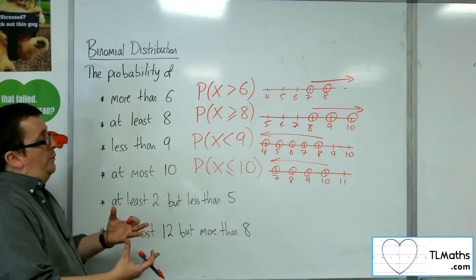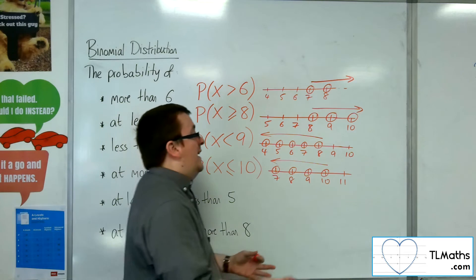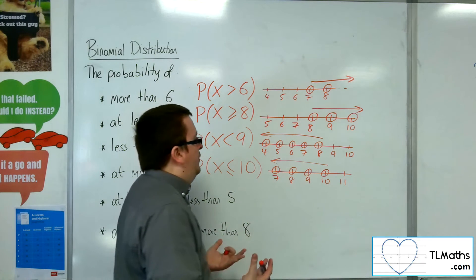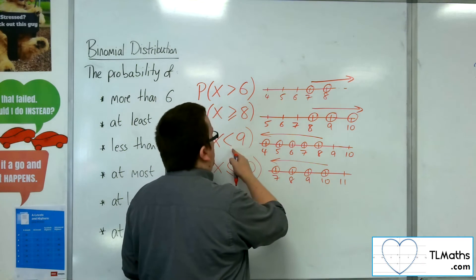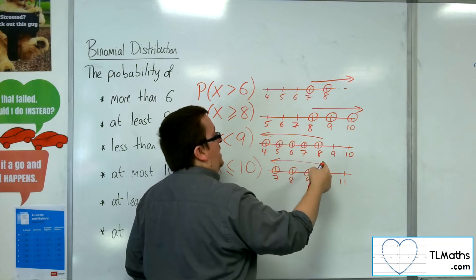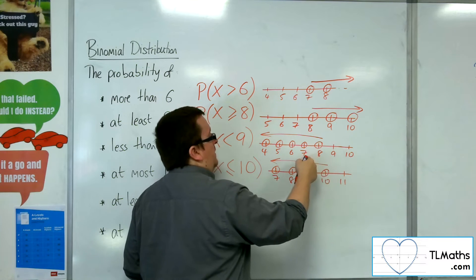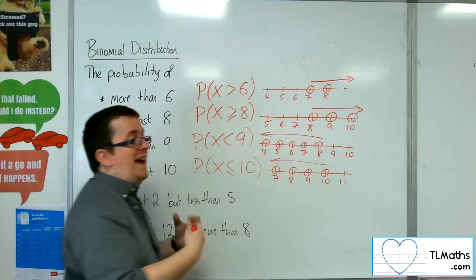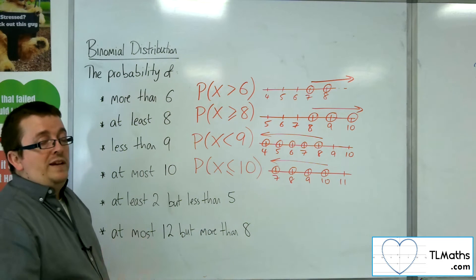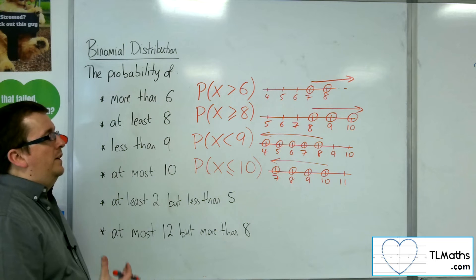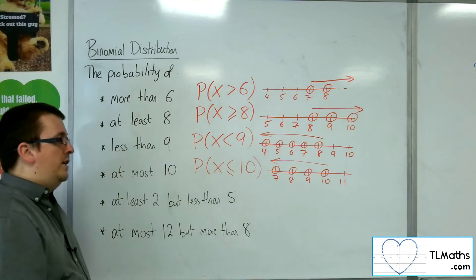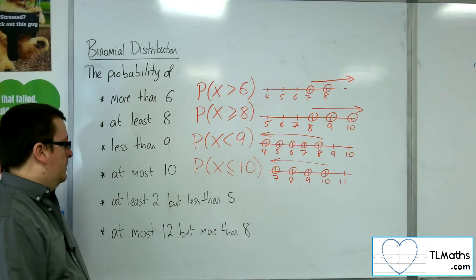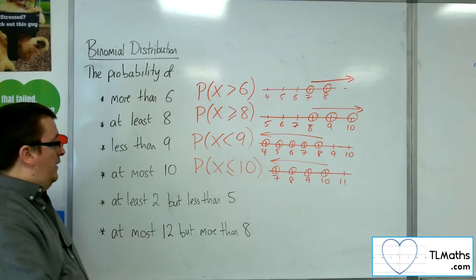So if you wanted any of those, then what you could do, if it was reasonable to do so, then if you want less than 9, you could find out the probability of X being 8, then 7, then 6, then 5, then 4, and then adding them all together. Conveniently, we will be looking at the cumulative distribution in the next video.